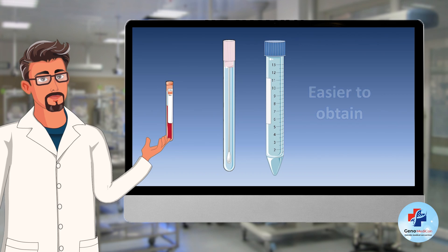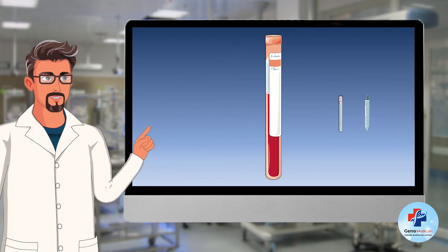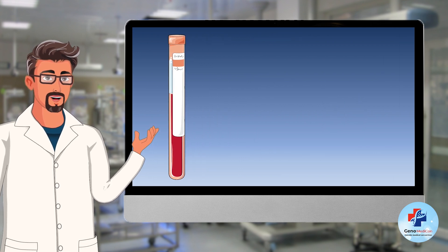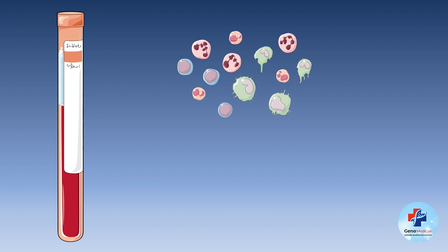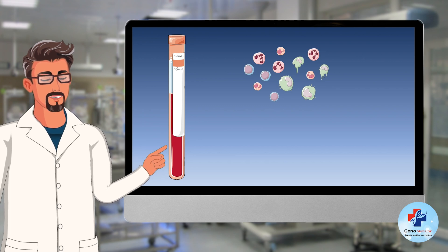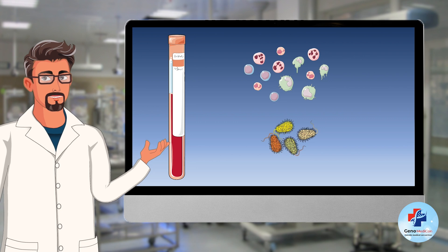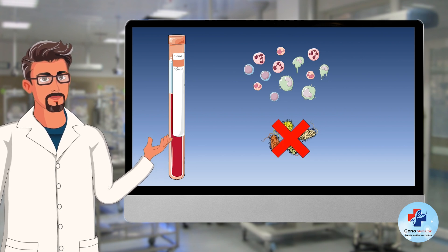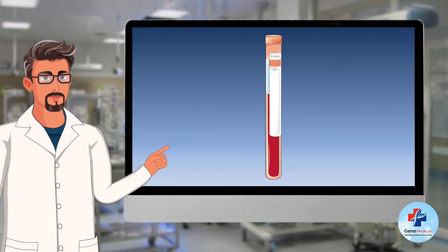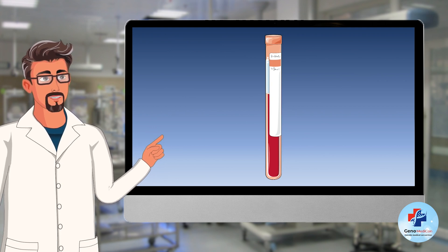Although cheek swab and saliva options are easier to obtain, blood samples remain the preferred choice for DNA extraction in genetic laboratories. Blood contains a relatively high concentration of nucleated cells — leukocytes or white blood cells — which are rich in DNA, making it a good source for obtaining substantial amounts of high quality DNA. Blood samples are most often not contaminated with other life forms, and many DNA extraction protocols and kits are optimized for blood samples, with established workflows making it convenient for researchers to follow standardized procedures.